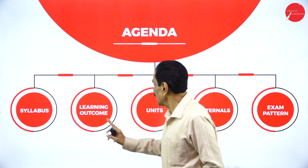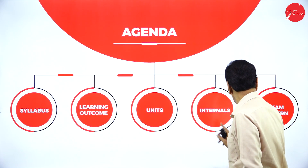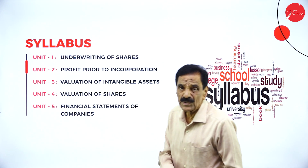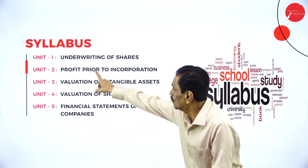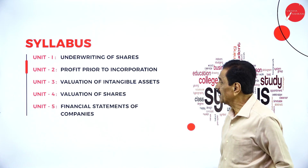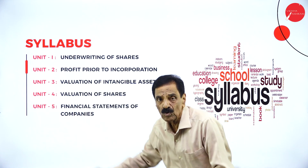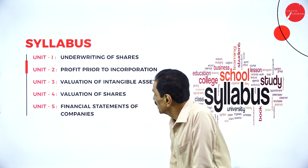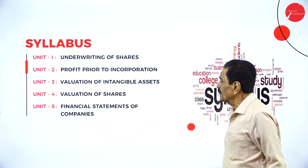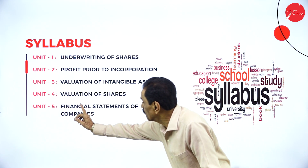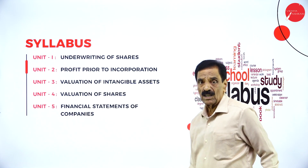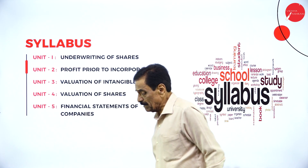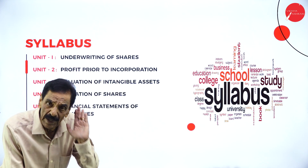The agenda includes: syllabus, learning outcomes, units, internal assessment, and exam patterns. The syllabus contains five units: Unit 1 — Underwriting of Shares; Unit 2 — Profit Prior to Incorporation; Unit 3 — Valuation of Intangible Assets; Unit 4 — Valuation of Share; Unit 5 — Financial Statement of Company.